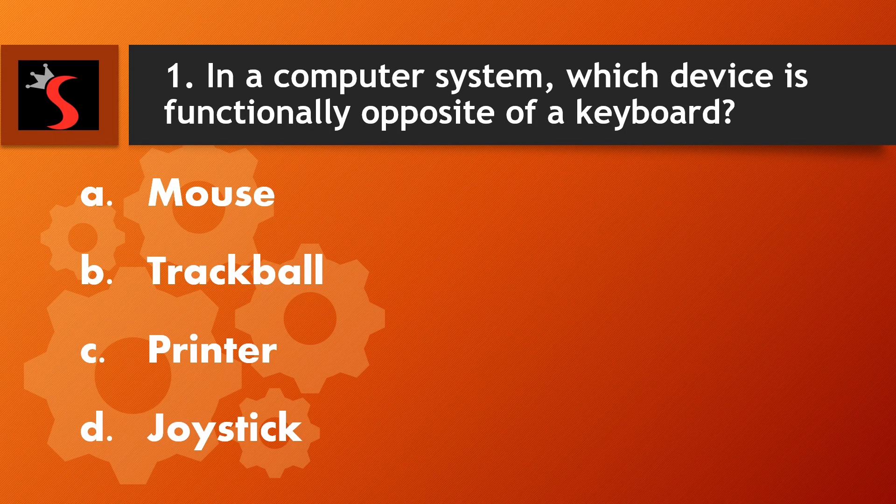The first question is: in a computer system, which device is functionally opposite of a keyboard? A. Mouse, B. Trackball, C. Printer, D. Joystick.